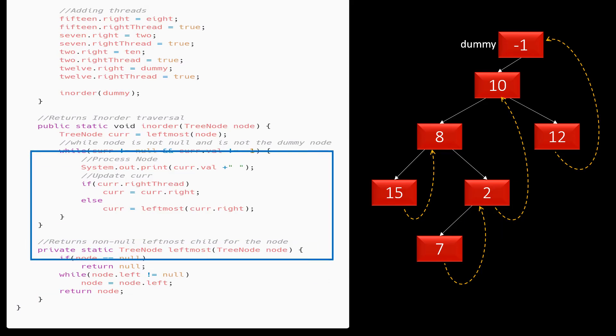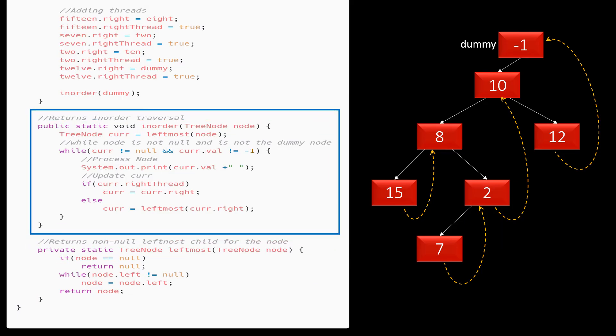Here is the inorder traversal method. In this, we first go to the leftmost node of the dummy and then loop while the node is not null and is not equal to the dummy node. As in our example, the dummy node has value -1. So, we have same condition for checking if it is not a dummy node. After that, we just process the node by printing it and update the current based on whether its right is a child or a thread.